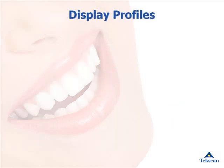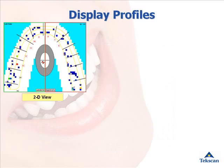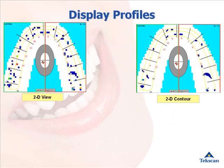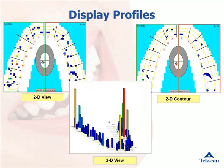T-Scan displays the data in three ways. In the 2D view, which displays raw data, each square represents a contact on the sensor. The 2D contour view averages the connected contacts together, which most closely resembles articulating paper marks. The 3D view is a great tool for patient education because you can see the height of the column correlating with the intensity of the force.